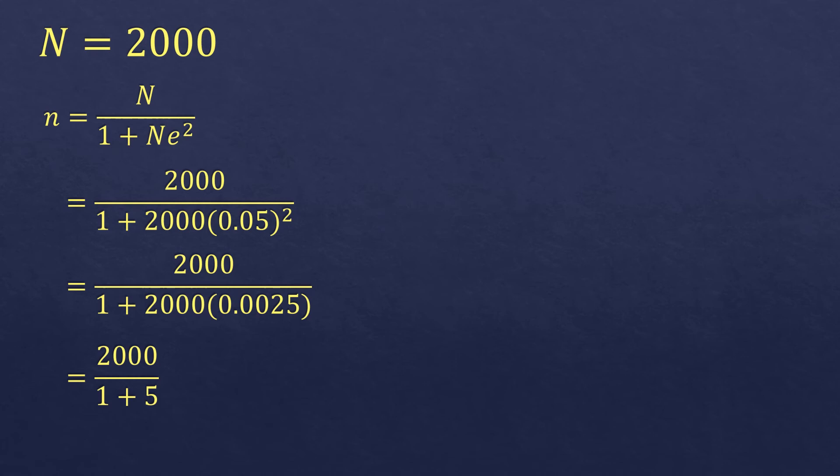So we are going to add 1 plus 5 at the bottom, it will be 6. And 2,000 divided by 6 will be 333.3333 and so on. So it's a repeating 3.